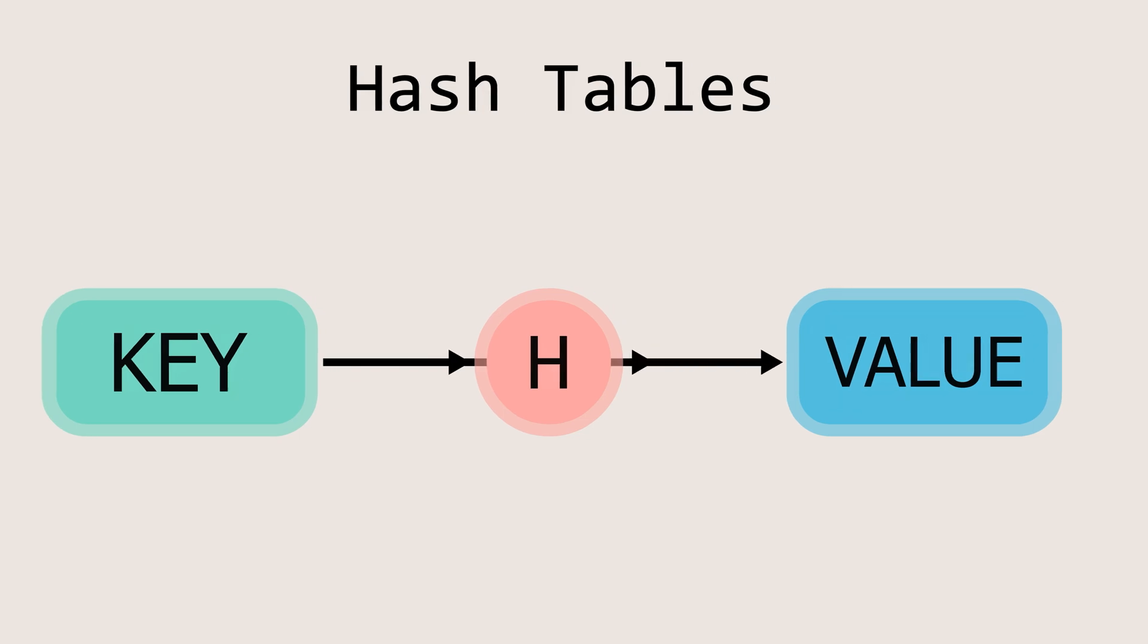In practice, this is implemented using arrays. Let's consider an array of size 8, with indices ranging from 0 to 7. We'll use a hash function that takes the key and performs a modulo operation with the size of the array, which in this case is 8. For simplicity, let's assume the key is a positive integer.